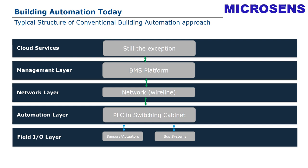All the sensors and actuators are connected by wire or by bus system directly to the automation layer, where the PLCs or DDC controllers are located, mostly mounted in cabinets. This layer is connected over the network with the management layer. Additionally, the network layer provides the complete network infrastructure for building automation systems, which allows connecting and networking all the PLCs, and provides data transfer from the automation layer to the management layer, where the common BMS platform resides.